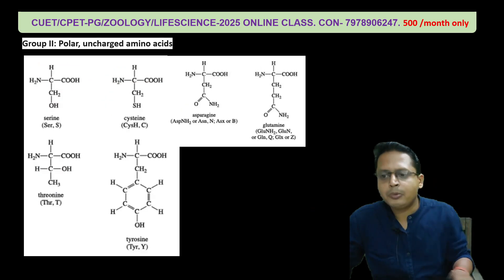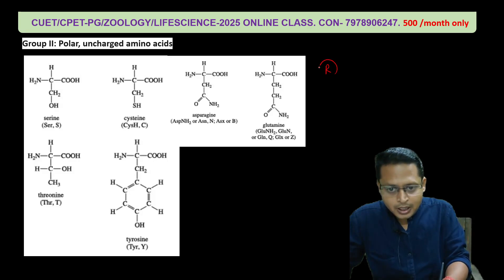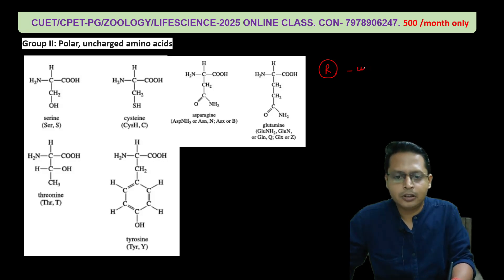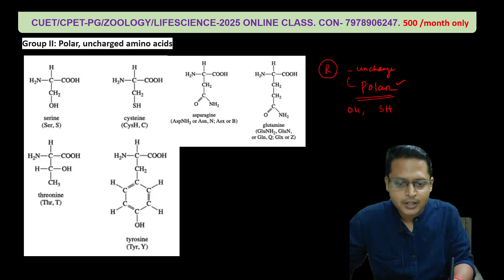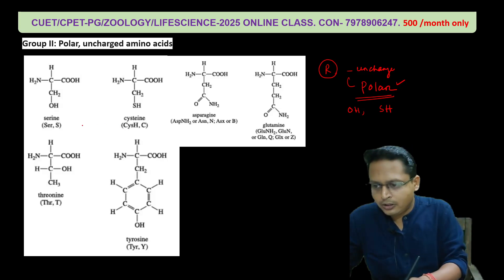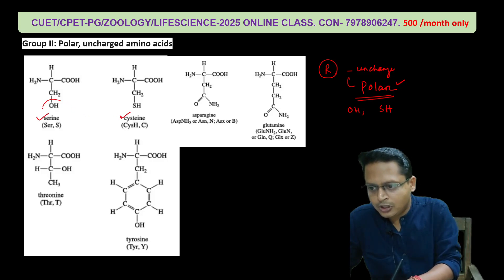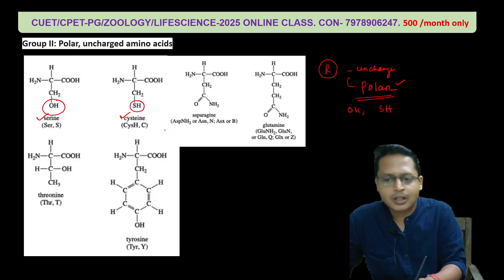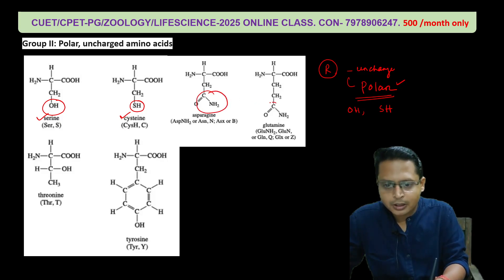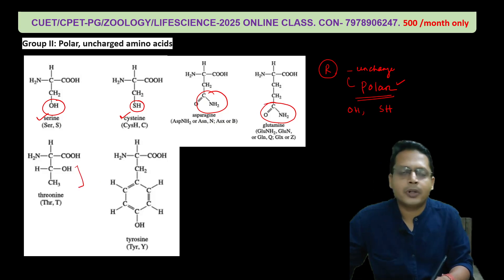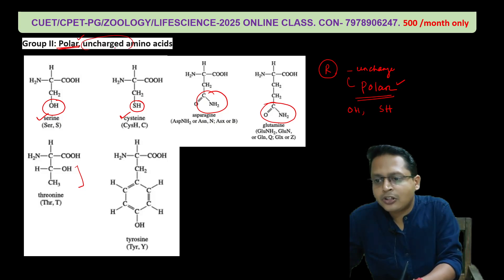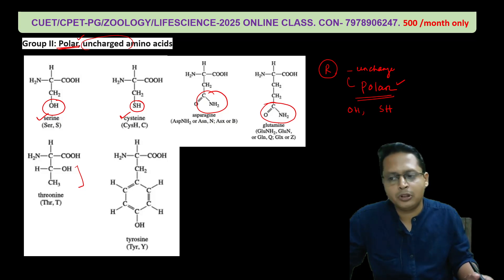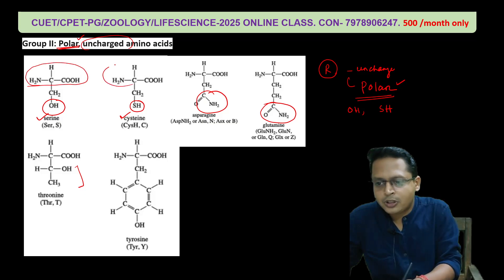The second group has an R group that is not a charged molecule — they don't carry charged molecules — but they carry polar molecules. The polar molecule contains groups like OH or SH. For example, cysteine has an SH group — that is a polar condition. This category is polar uncharged amino acids — they are not charged but they carry polar electrons, so they are polar molecules.